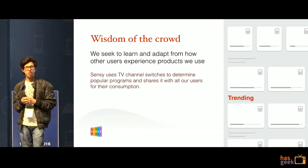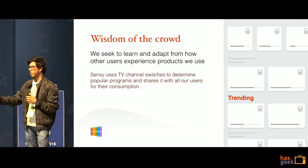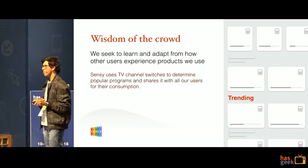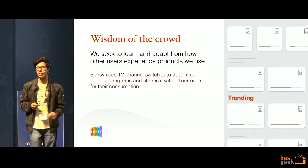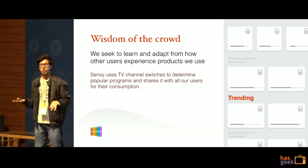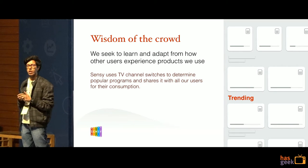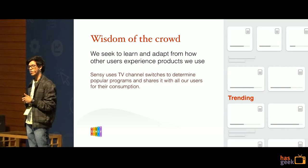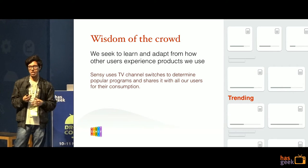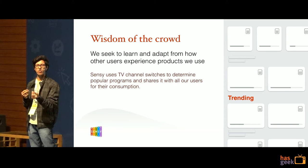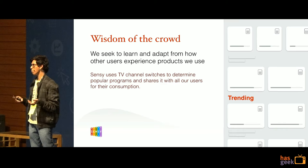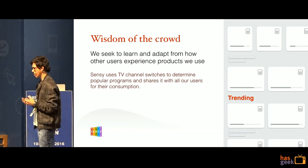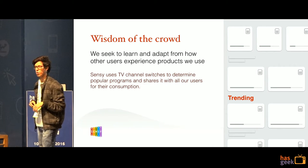We also had data on what people were actually watching, and we used this to introduce a new bar called 'trending'. This helped us surface events happening on TV — if a soap opera had a big wedding, or a cricket match was on, or the Oscars were airing, we could automatically surface those. This is really the wisdom of the crowd: everyone contributes data individually, and what emerges from that aggregate is something that greatly guides what people would like to watch.